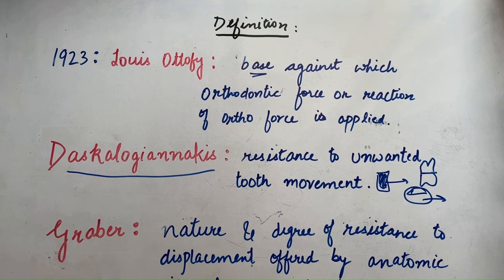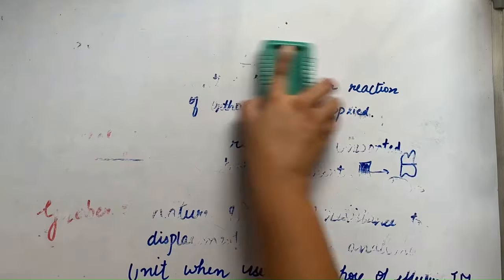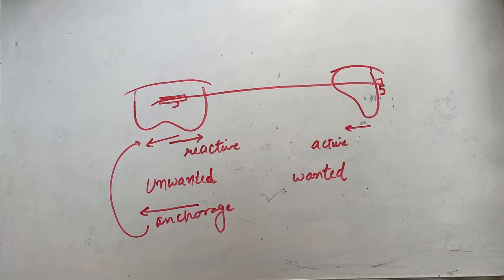Then Graber defined anchorage in orthodontics as nature and degree of resistance to displacement offered by anatomical unit when used for purpose of affecting tooth movement. To better understand these definitions, let's talk about Newton's third law of motion.